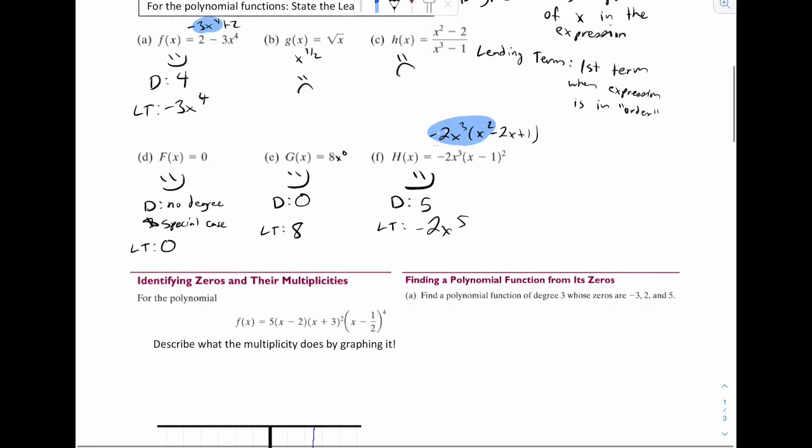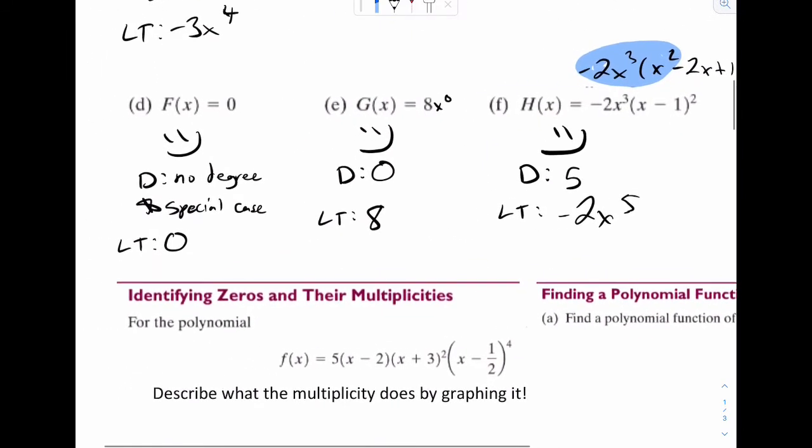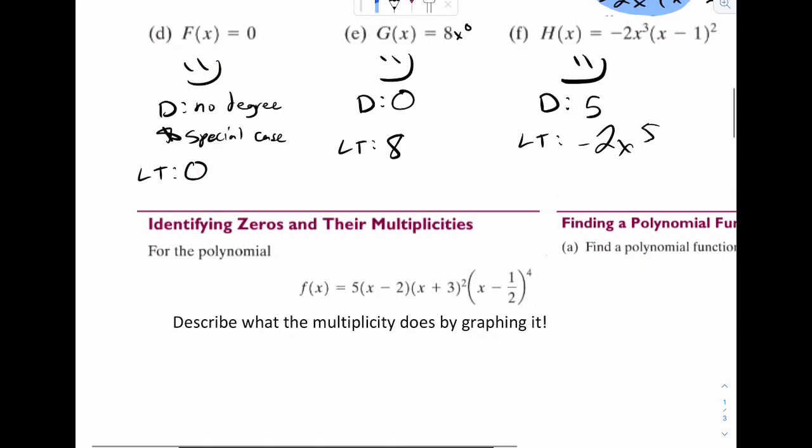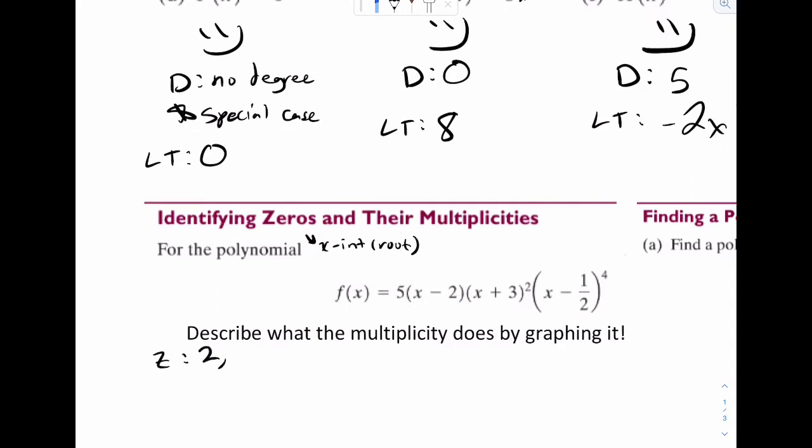Next one. So identifying zeros and their multiplicities. So zeros are going to be pretty straightforward. It's simply what makes the expression zero, or think of it as like an x-intercept. Same idea. We've been talking about it as a root as well. So look at these three expressions here. We can see that two would make it zero, negative three, and one-half.